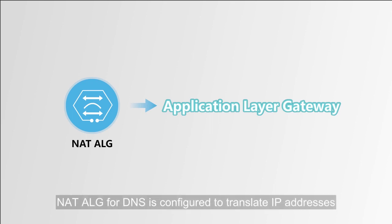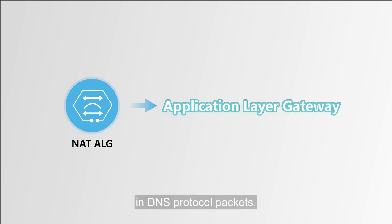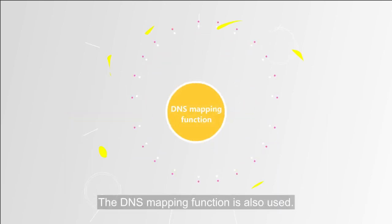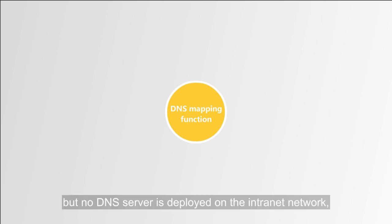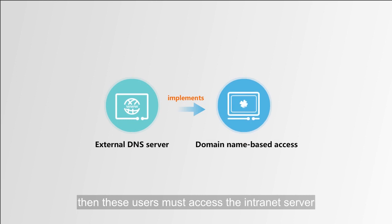NITE ALG for DNS is configured to translate IP addresses in DNS protocol packets. The DNS mapping function is also used. If intranet users have to use a domain name to access an intranet server, but no DNS server is deployed on the intranet network, then these users must access the intranet server through an extranet DNS server.